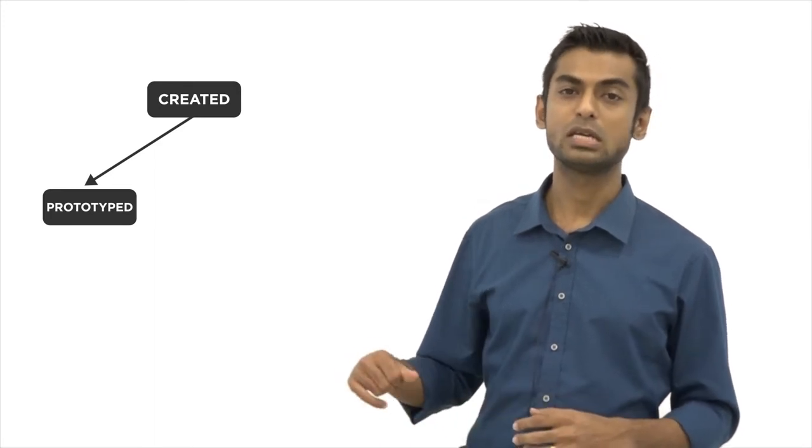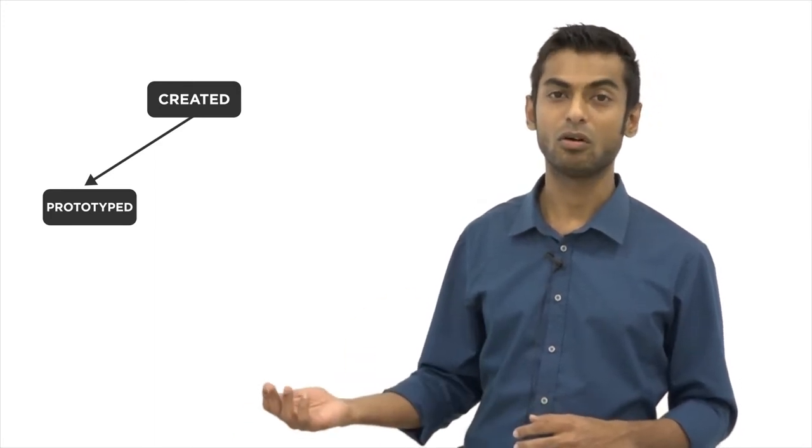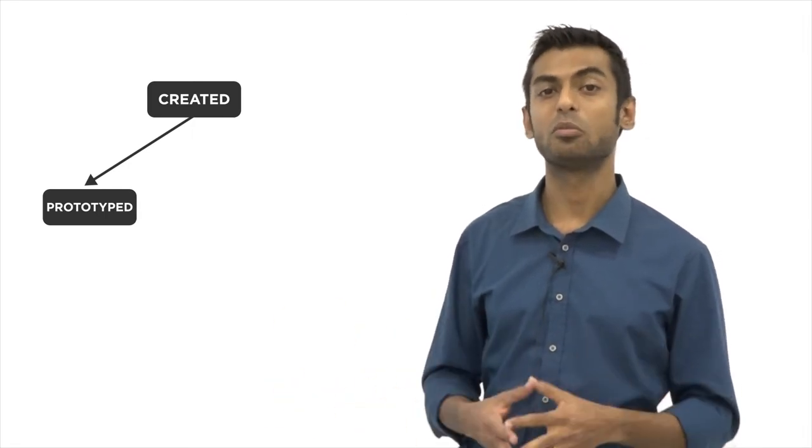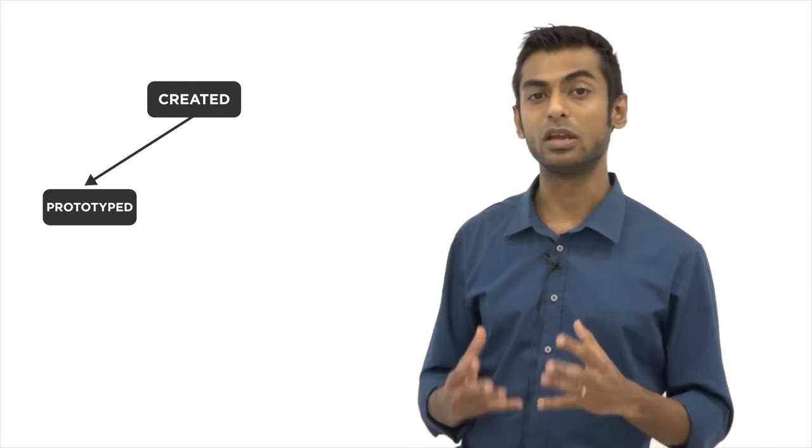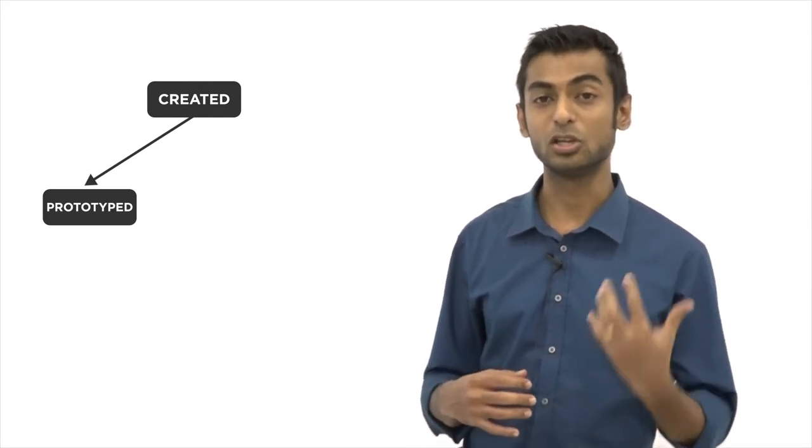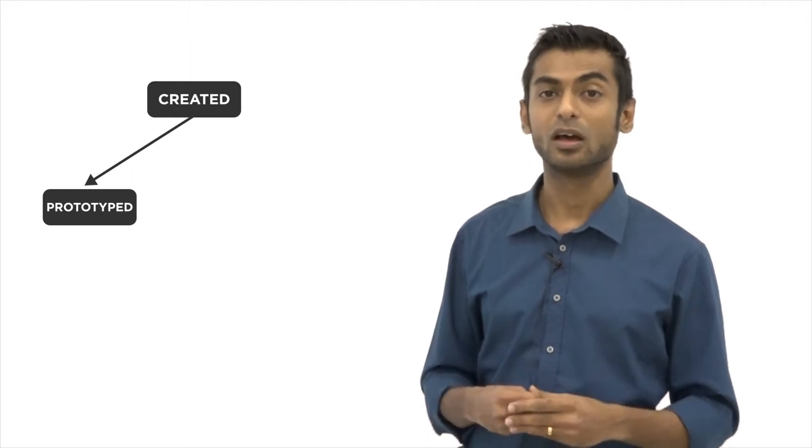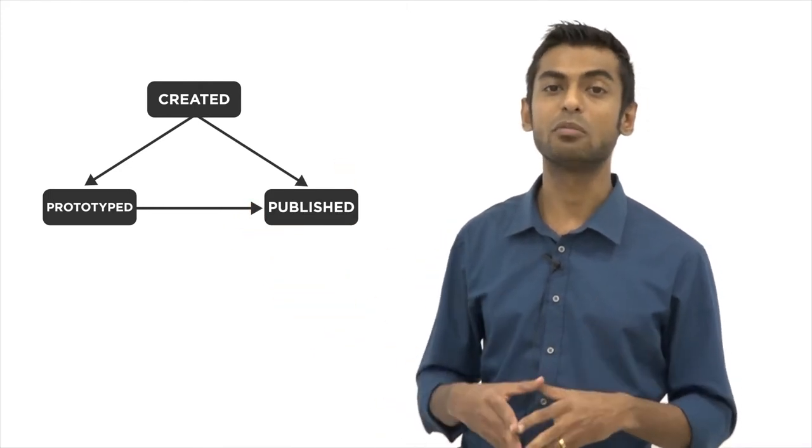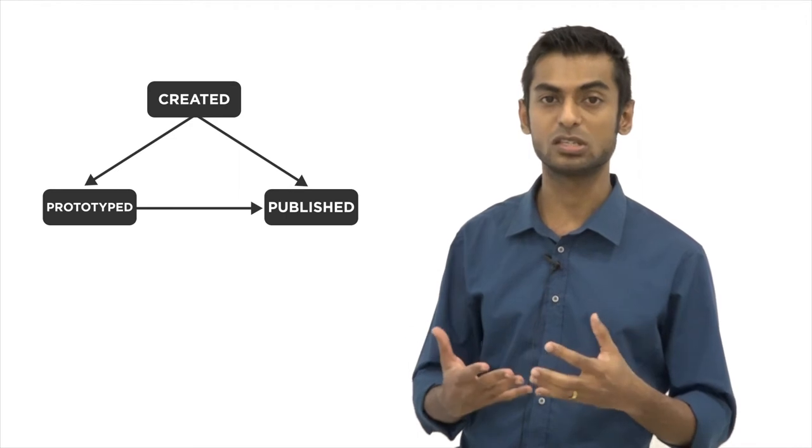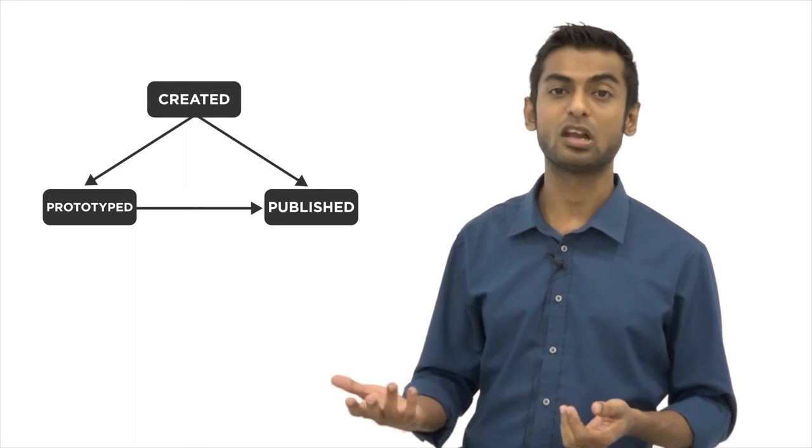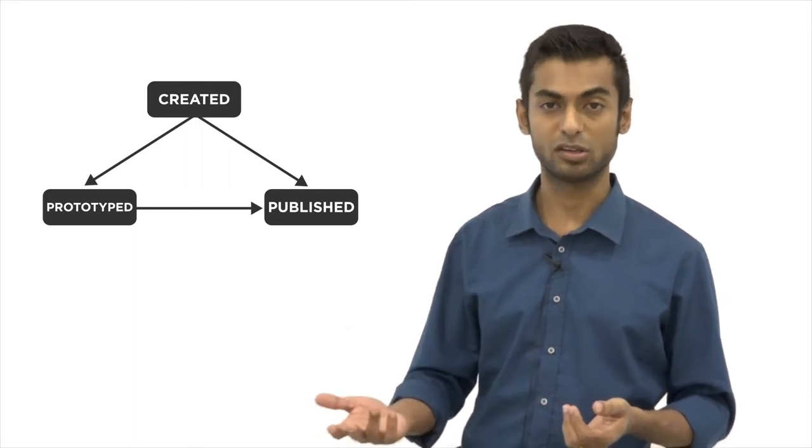Once your API is actually ready to be used and a business person would come along and decide when the right time it is to be exposed for end users to start using it. So the API will move to the published state in the lifecycle and this would mean that it becomes available on the API store. So it is accessible to external users and they can also start invoking that API proxy as well.